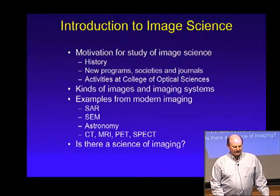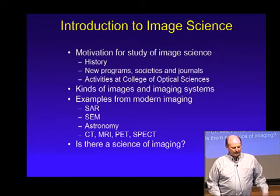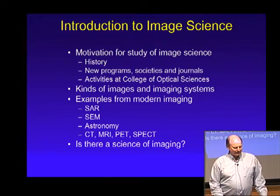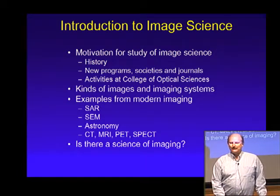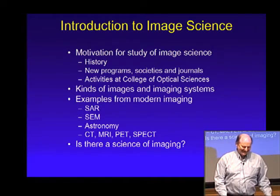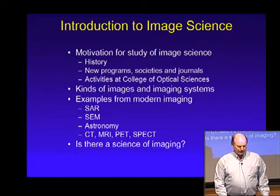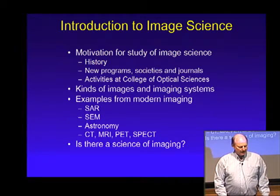I'll talk about images and imaging systems and put up a taxonomy we can use to analyze imaging systems — what kinds of effects are they measuring, what are they doing? It's nice to have formal ways of putting things into categories. We'll talk about some examples from modern imaging: synthetic aperture radar, scanning electron microscopy, astronomy, and near and dear to my own heart, the medical imaging modalities of CT, MRI, PET, and SPECT.